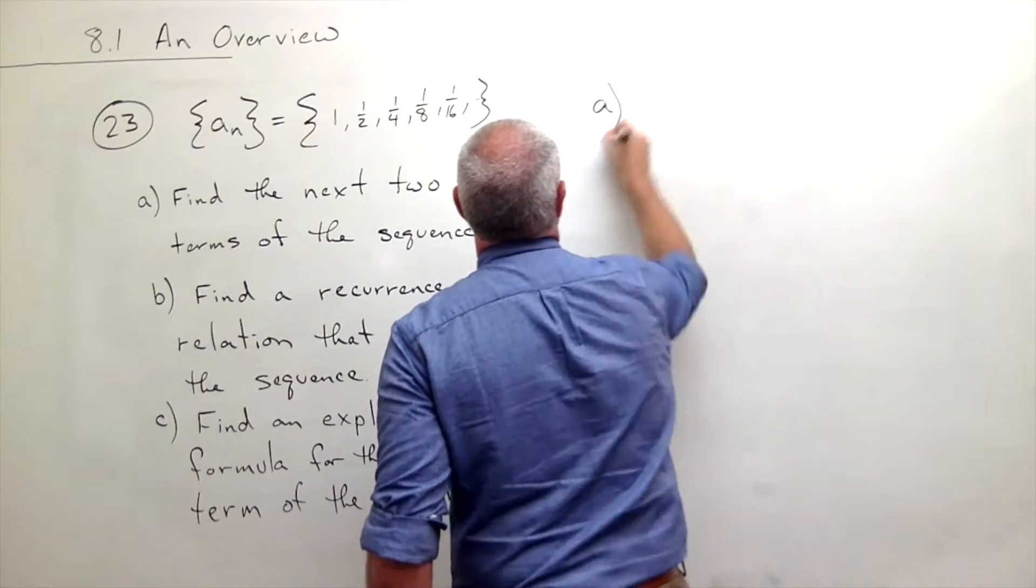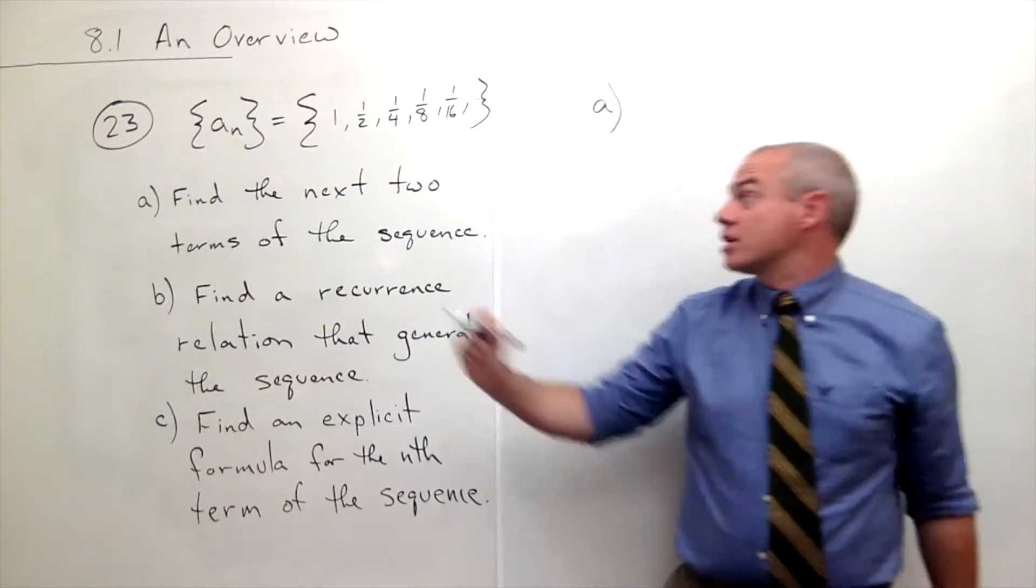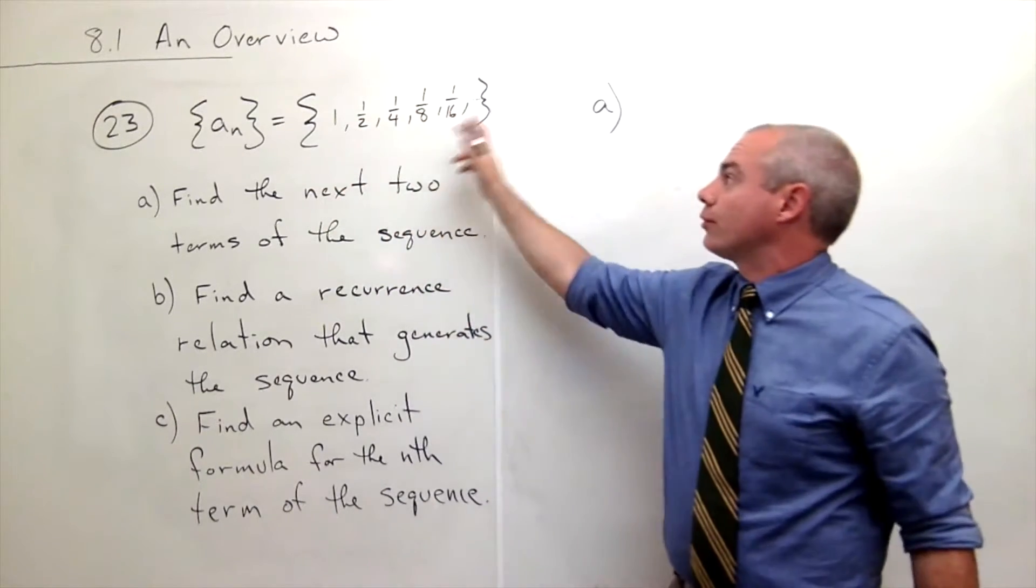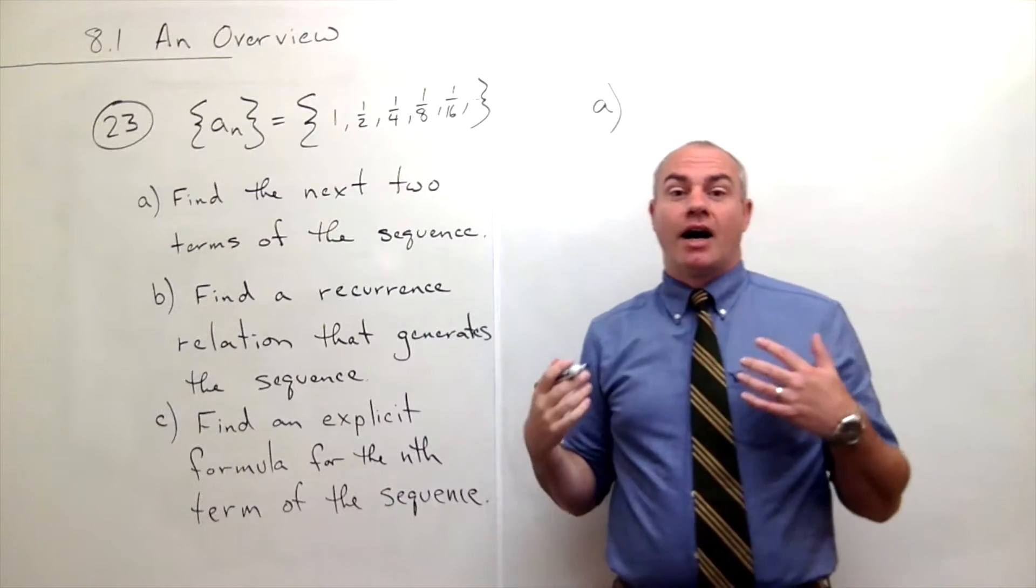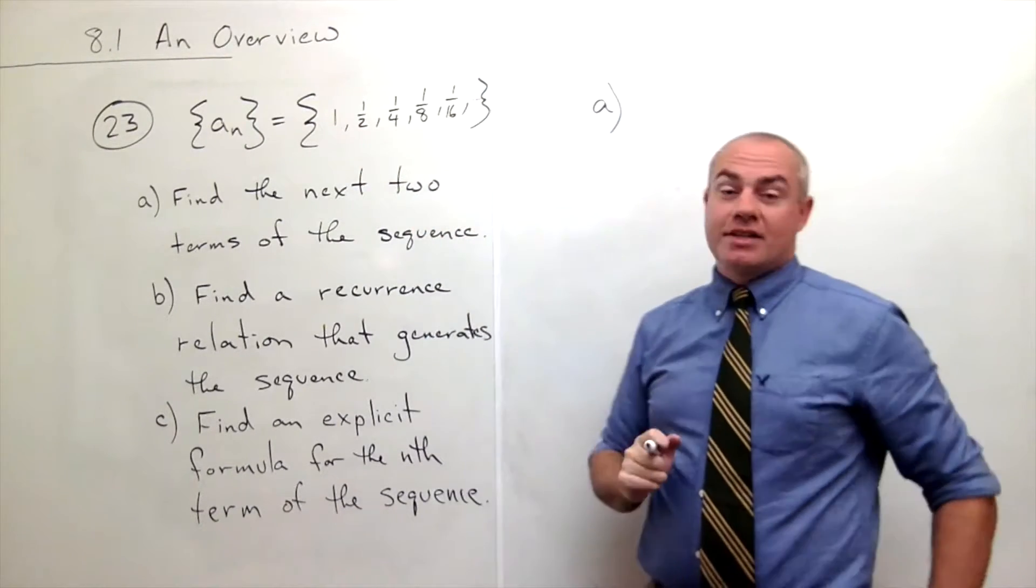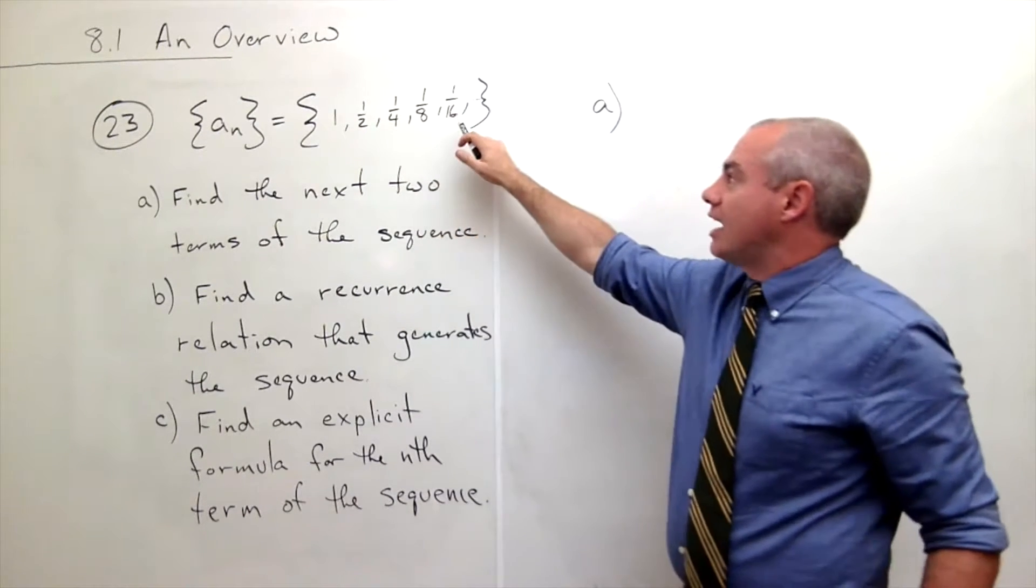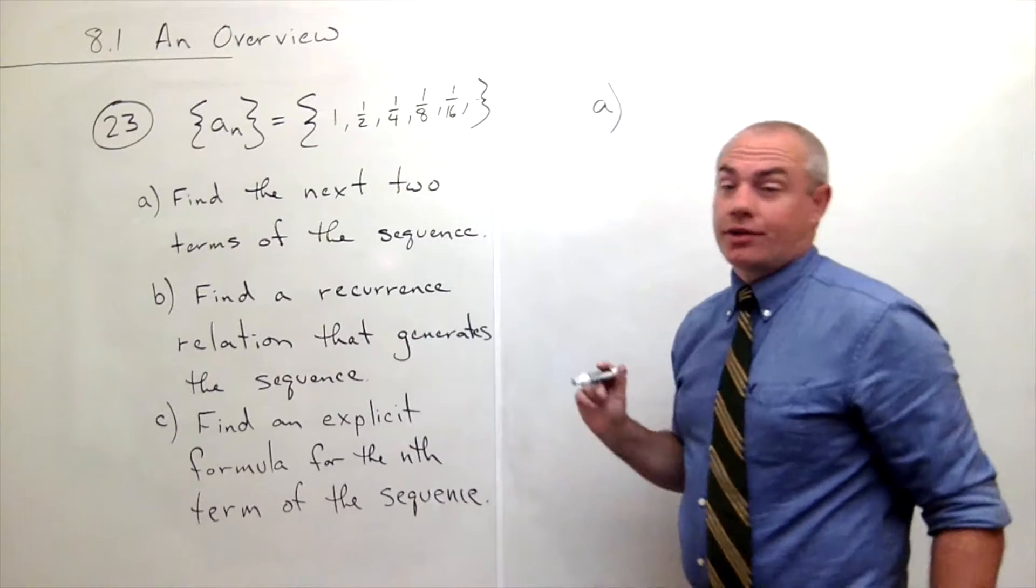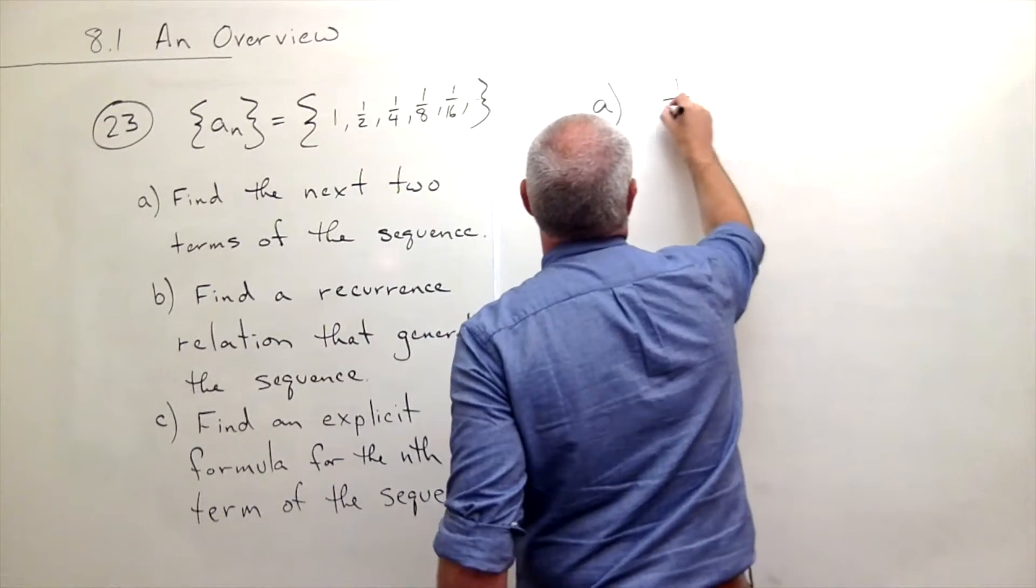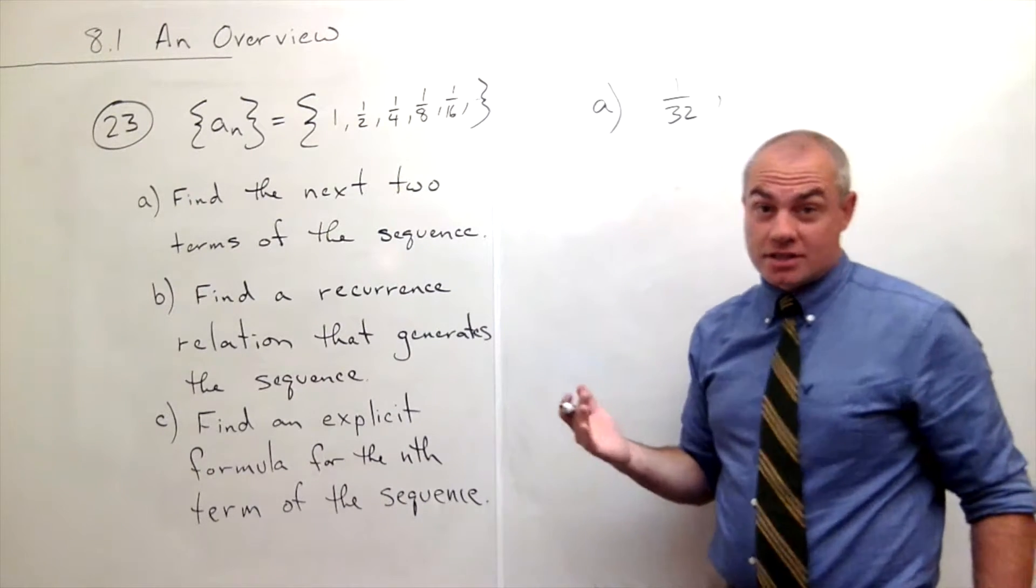Let's start with part a. In part a, I just want to say, what would be the next two terms? So I've got one, one-half, one-fourth, one-eighth, one-sixteenth. I think we see the pattern - each time I multiply this thing by a half. And so if I'm multiplying by a half every single time, the next guy would be one over thirty-two, and then the next guy would be one over sixty-four.